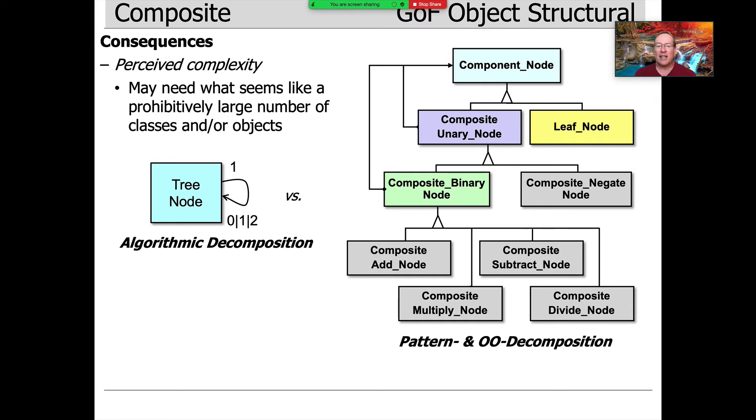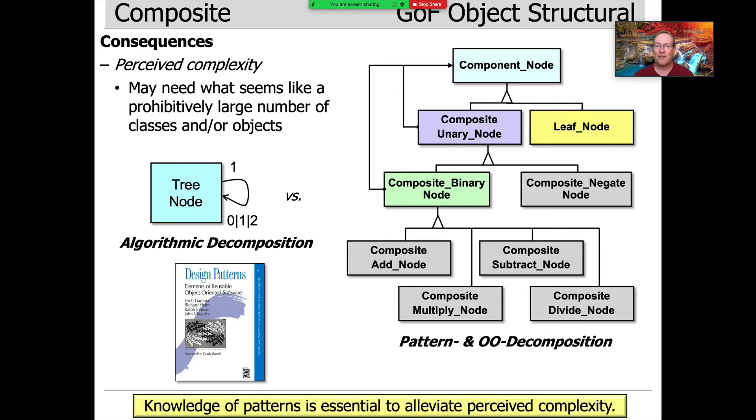Whereas if you look on the right-hand side, our pattern and object-oriented decomposition has like a dozen classes. Well, and that may seem like more at first, but the deal is once you know the pattern, you don't look at this as a dozen classes. You look at this as a class hierarchy that's refining the component node, and then the subclasses are filling in the blanks as needed in order to get the job done. So it's only perceived complexity if you don't understand the pattern. Once you know the pattern, you're like, oh, gosh, that's the composite pattern. I expect to see a bunch of different subclasses. Not a big deal. I've understood it at a higher level. So, of course, what this implies is you've got to know patterns to make sense of this.